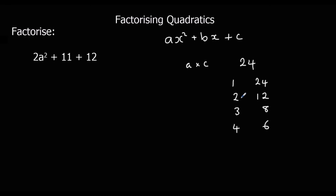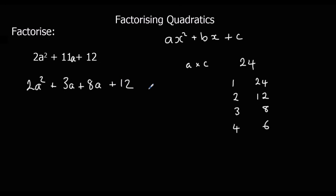Then we look at which of these factor pairs can make 11. So 1 and 24 can't make 11, 2 and 12 can't, 4 and 6 can't — so it's going to have to be 3 and 8. We use 3 and 8 to rewrite the middle term. What we're doing is un-adding the two middle terms: when we expand we get 4 terms and then simplify. By doing a times c and finding which factors sum to our b number, we've undone the adding that comes from expanding.